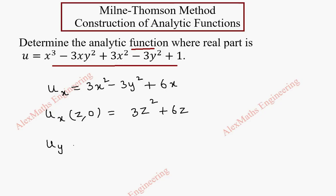Now let's find uy. It is the partial derivative with respect to y. So the first term is 0, and here minus 3x is a constant, and y² derivative is 2y. 3x² is fully constant. This is minus 6y.